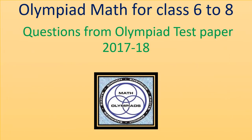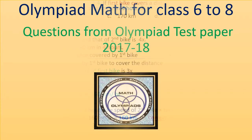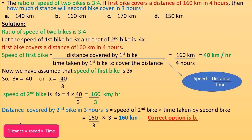Hello friends, welcome to my channel. This is Olympiad math for class 6 to 8, questions from Olympiad test paper 2017. The ratio of speed of two bikes is 3:4. If the first bike covers a distance of 160 km in 4 hours, then how much distance will the second bike cover in 3 hours?